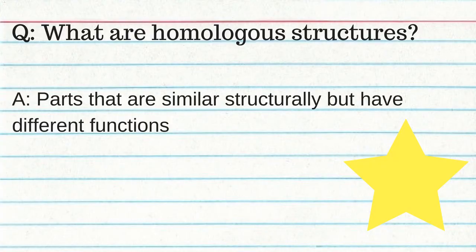Homologous structures are parts that are similar structurally but have different functions — example: the wing of a butterfly and the front leg of an elephant. They indicate common ancestry. Analogous structures are parts that are different structurally but have similar functions — example: the wing of a bird and the wing of a fly. They indicate that similar environmental pressures result in similar structures. Vestigial structures exist in organisms but serve no function — examples: the human appendix and the hip bone in a whale — indicating a common ancestor.